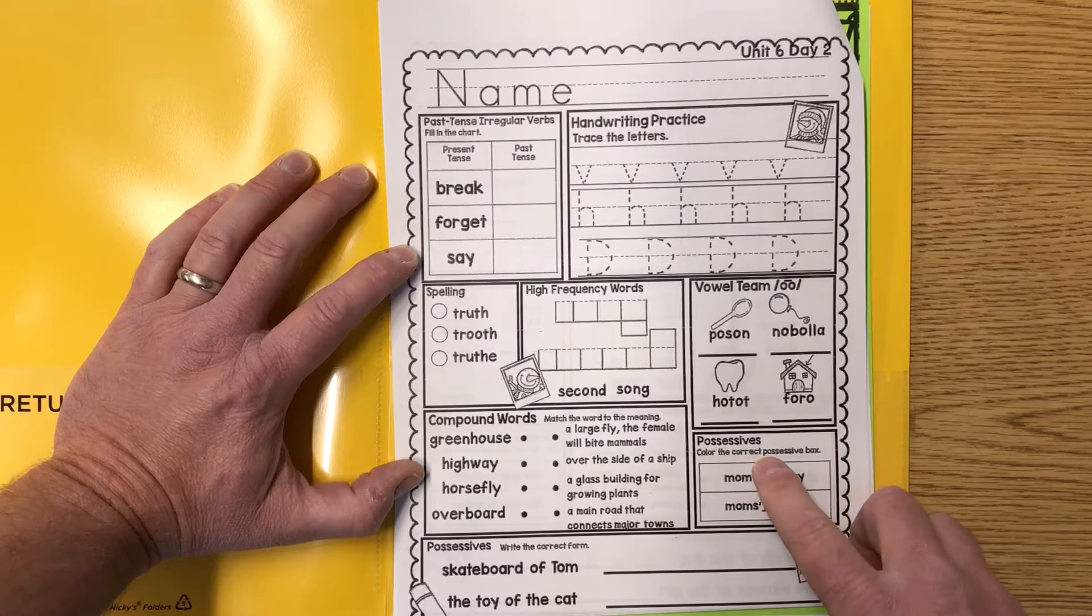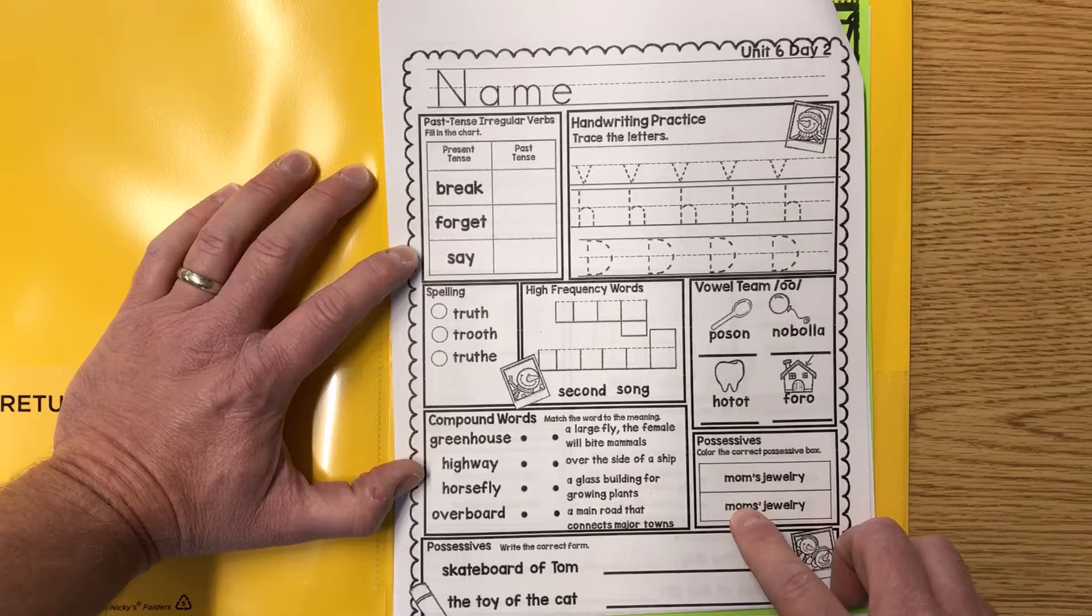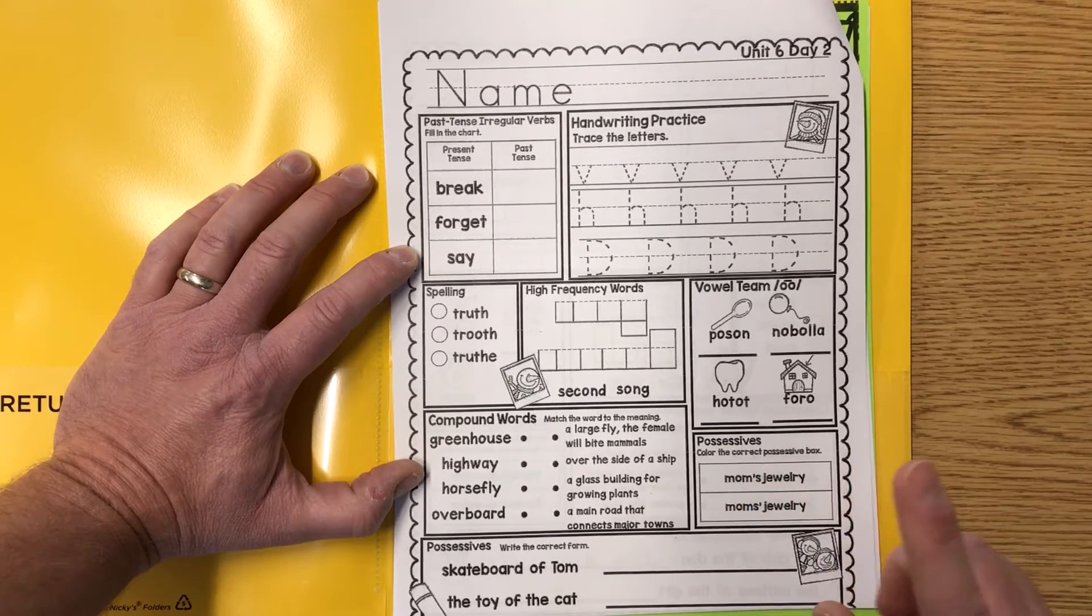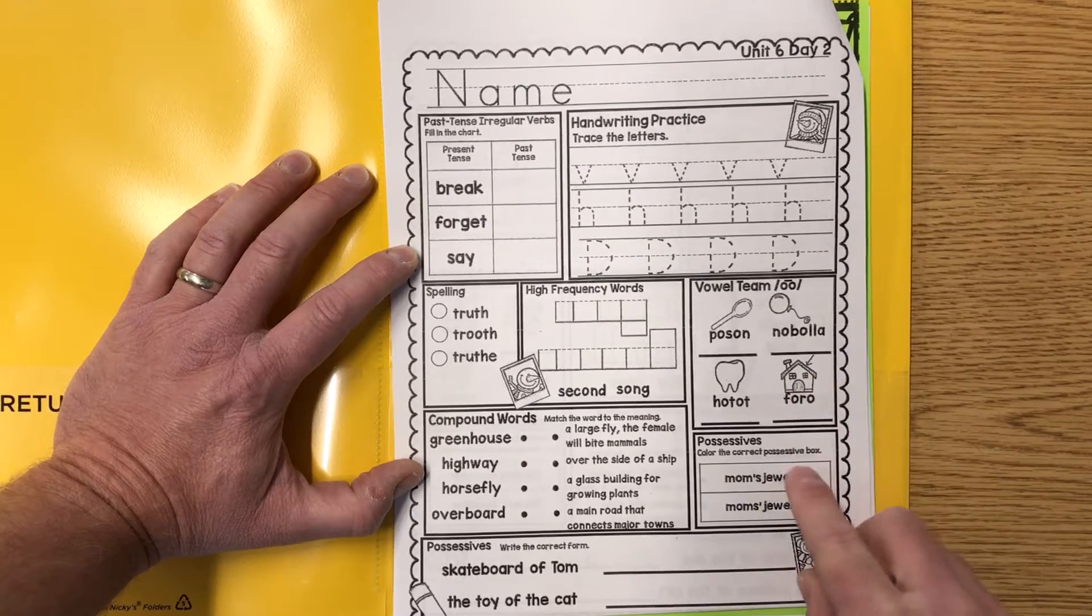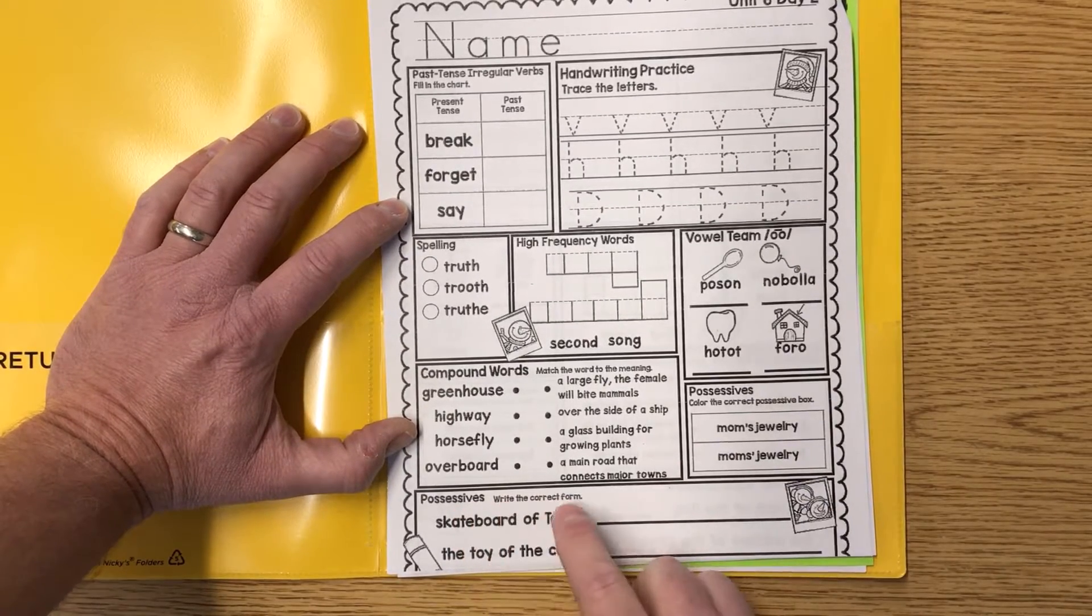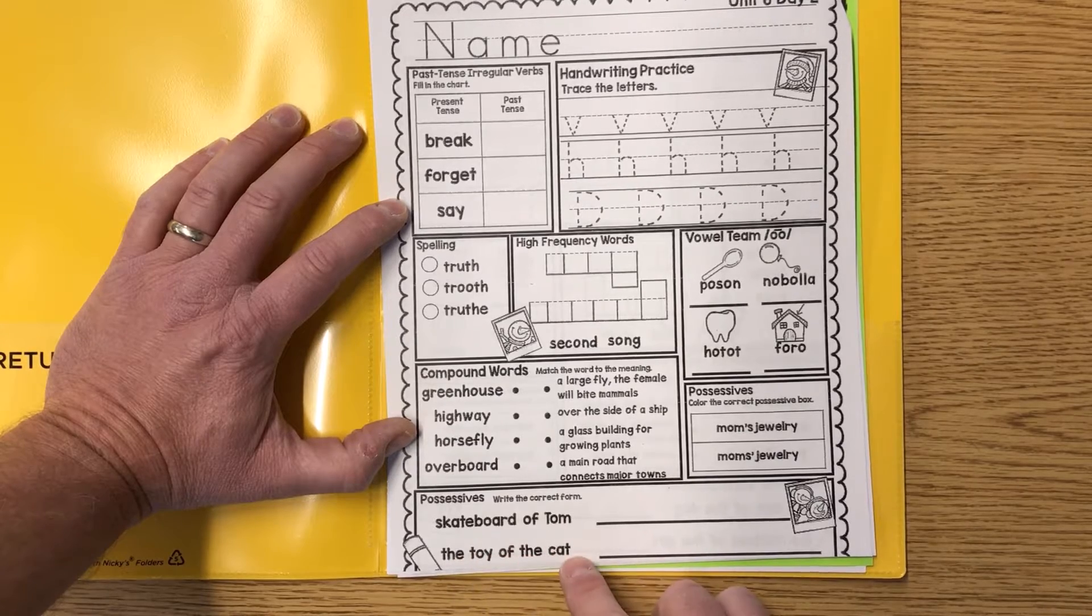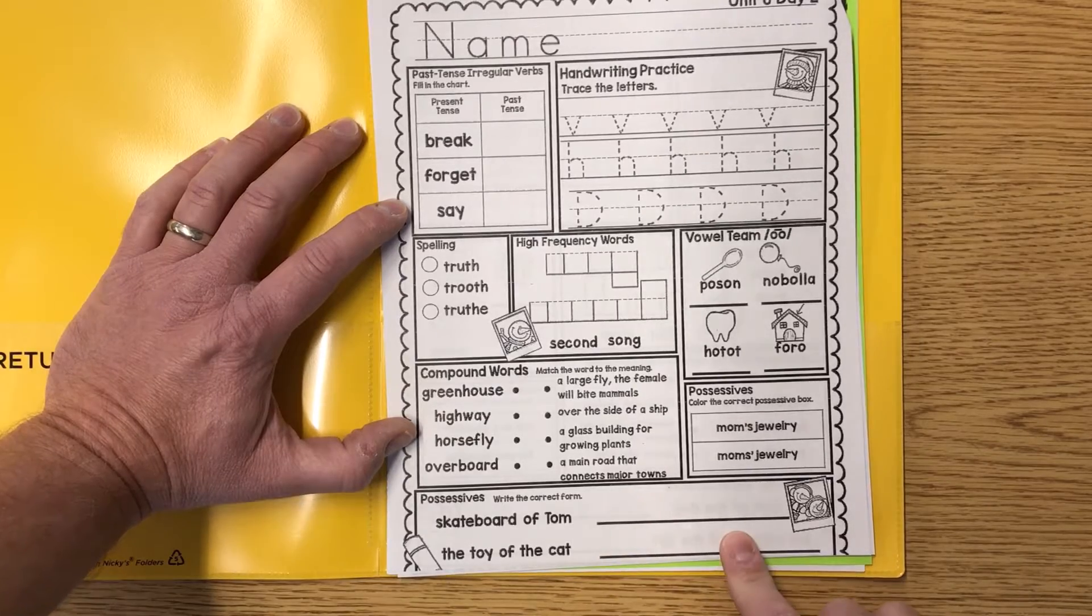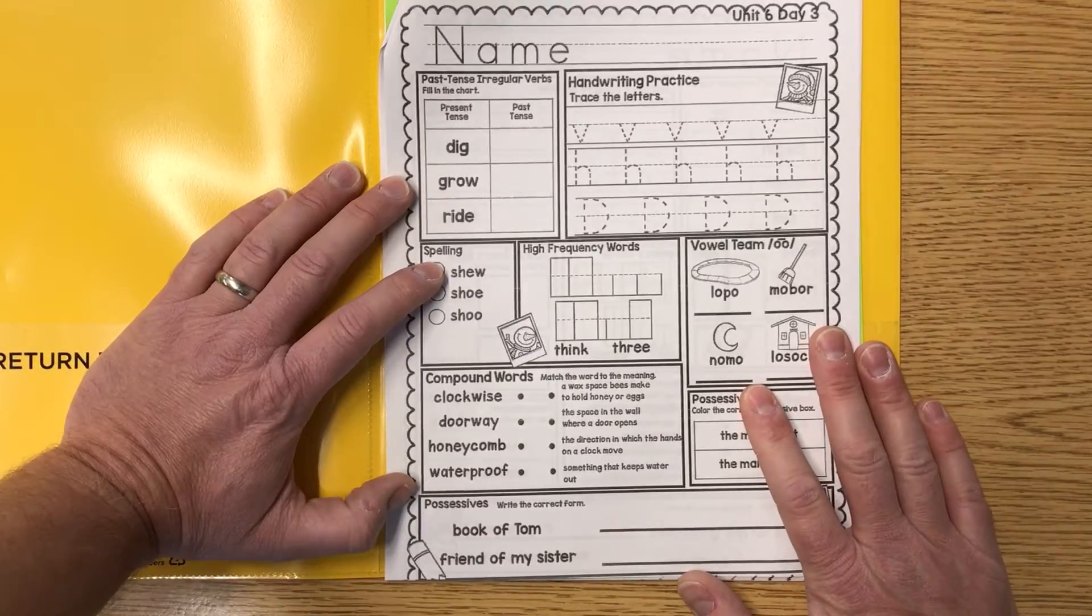Possessives. Color the correct possessive box. We either have mom's jewelry or mom's jewelry. One of these has an apostrophe before the S, one has it after the S. Remember, it's before the S, that's for one thing like jewelry. That's a little hint. Possessives. We have some more possessives. Write the correct form for skateboard of Tom, the toy of the cat. So it might be Tom's skateboard and the cat's toy. Write that correctly on the line.